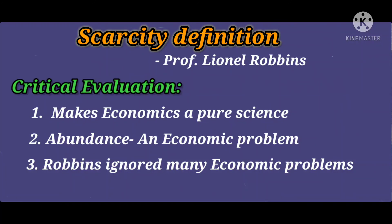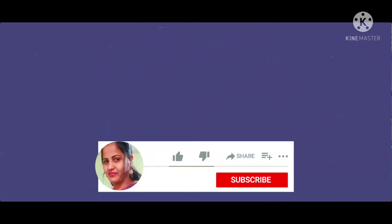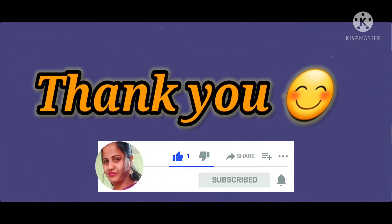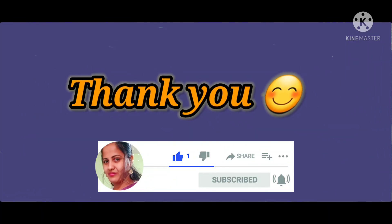The next point is the static view. The definition given by Robbins takes an entirely static view of the scarcity problem, as it deals with the adjustment of given scarce resources with given scarce ends. It does not encompass dynamism in its fold, either in the means or in the ends — so this is a highly static view of a dynamic problem. This is all about the scarcity definition given by Robbins and its critical evaluation. Hope this video will be very helpful for preparing your exam. Thank you and have a good day.